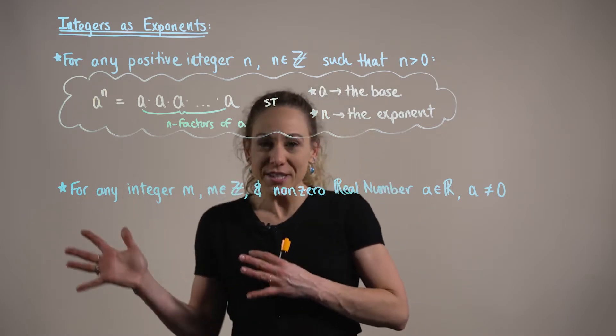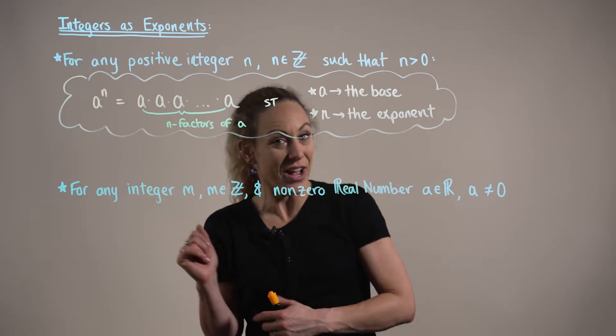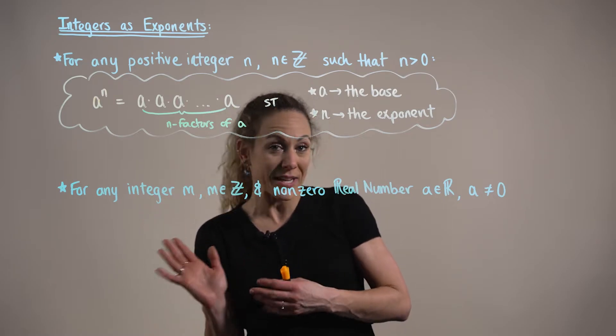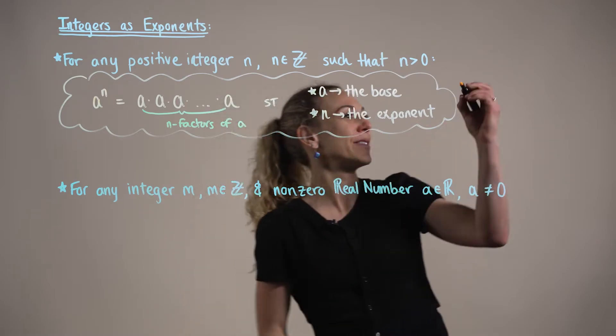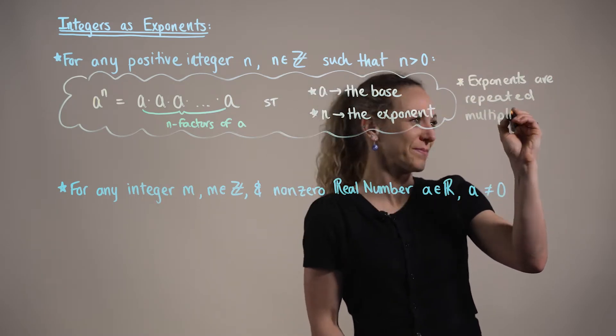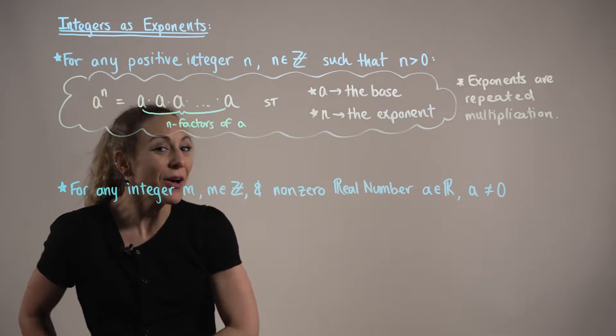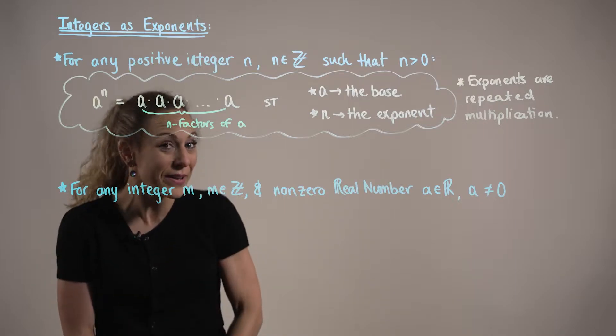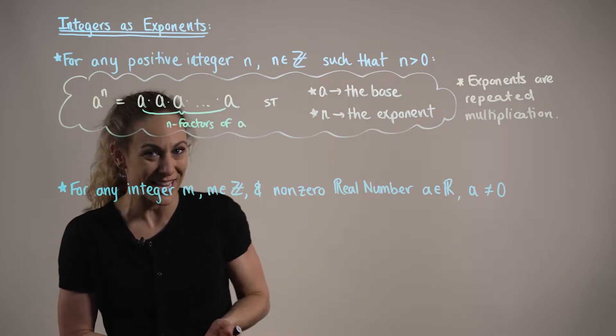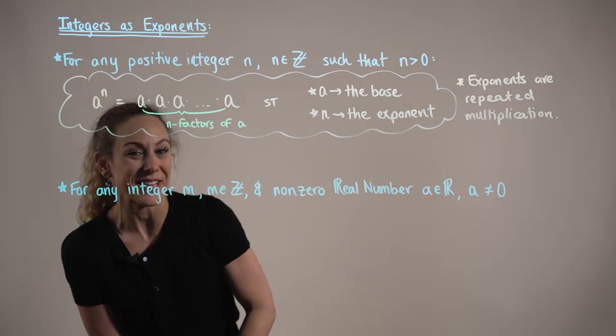Another way to think about these positive integer exponents is simply as repeated multiplication. To help us better understand this repeated multiplication, let's consider the following example.